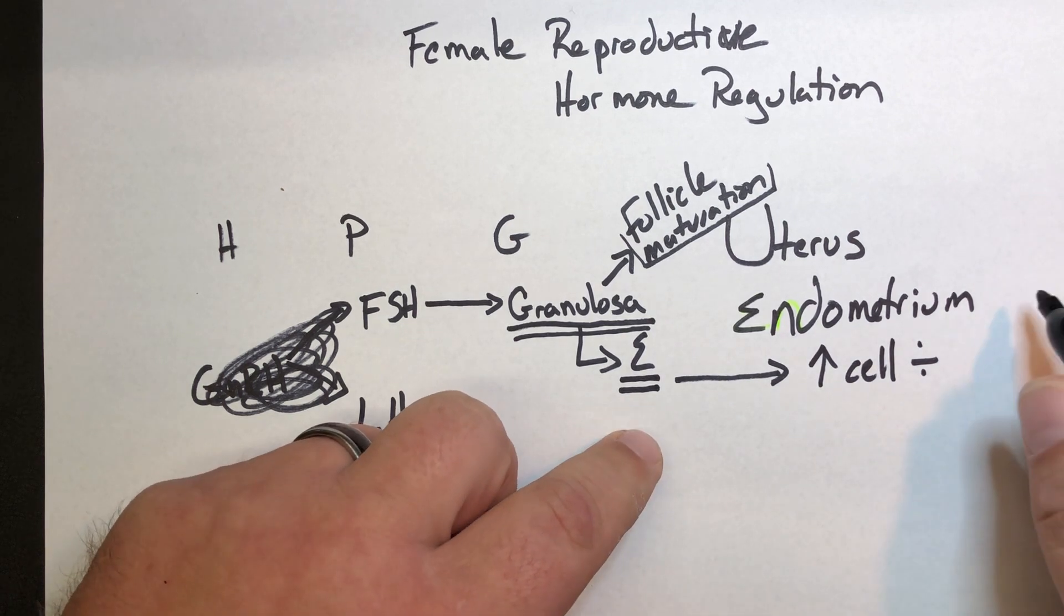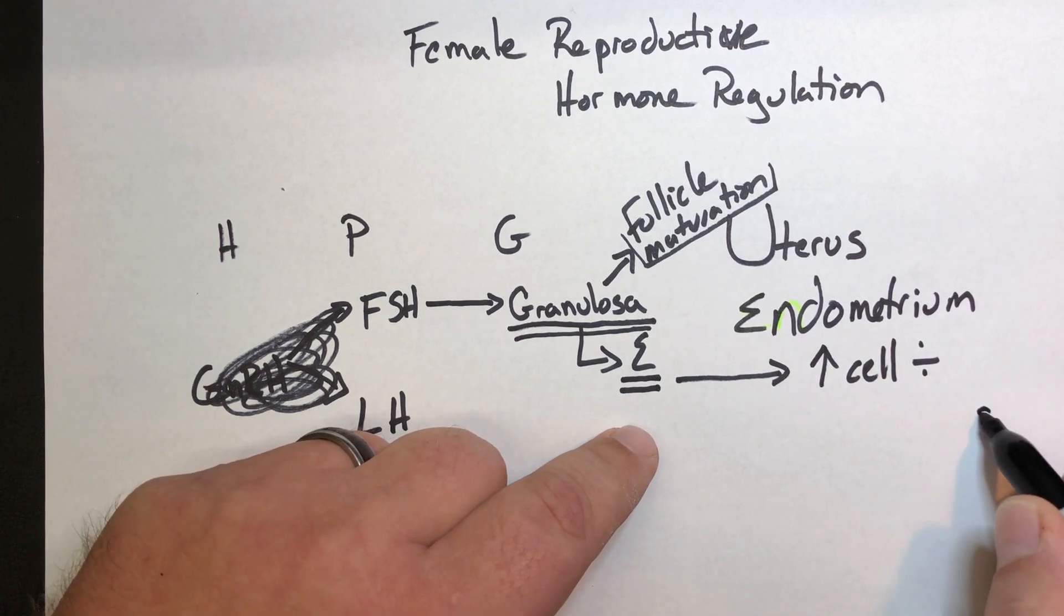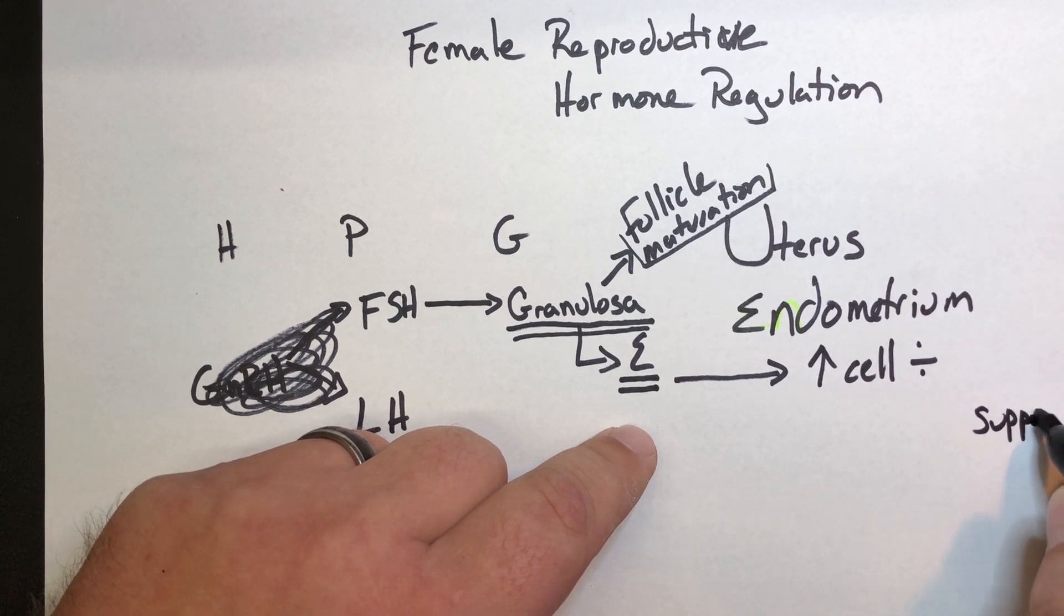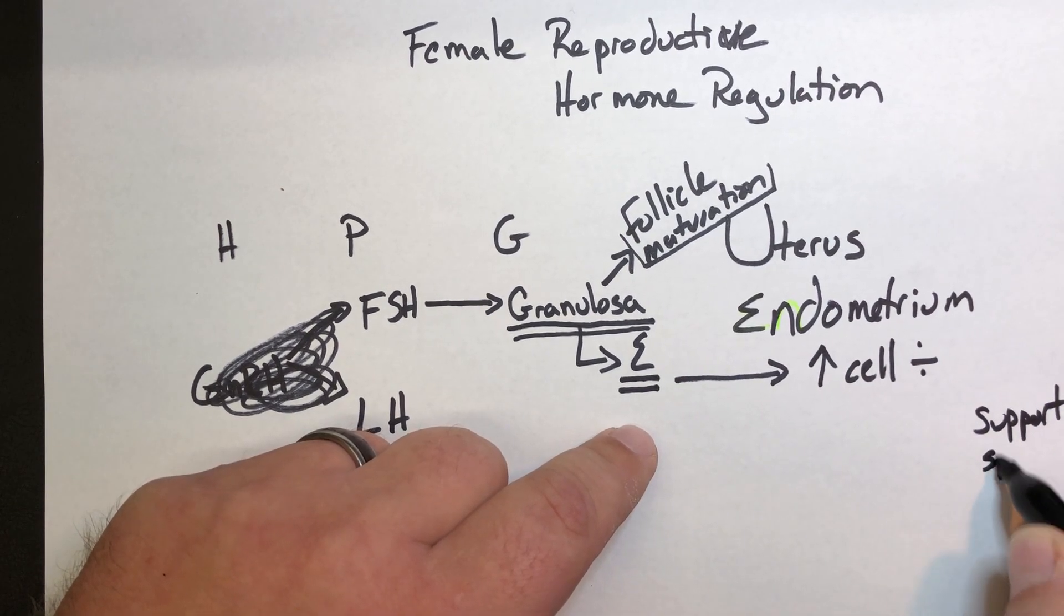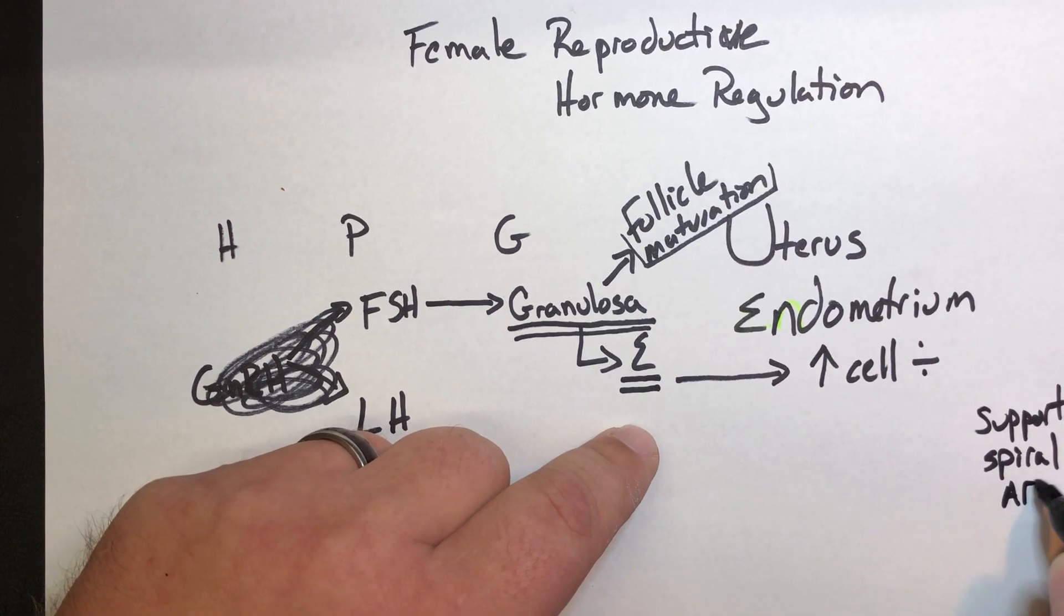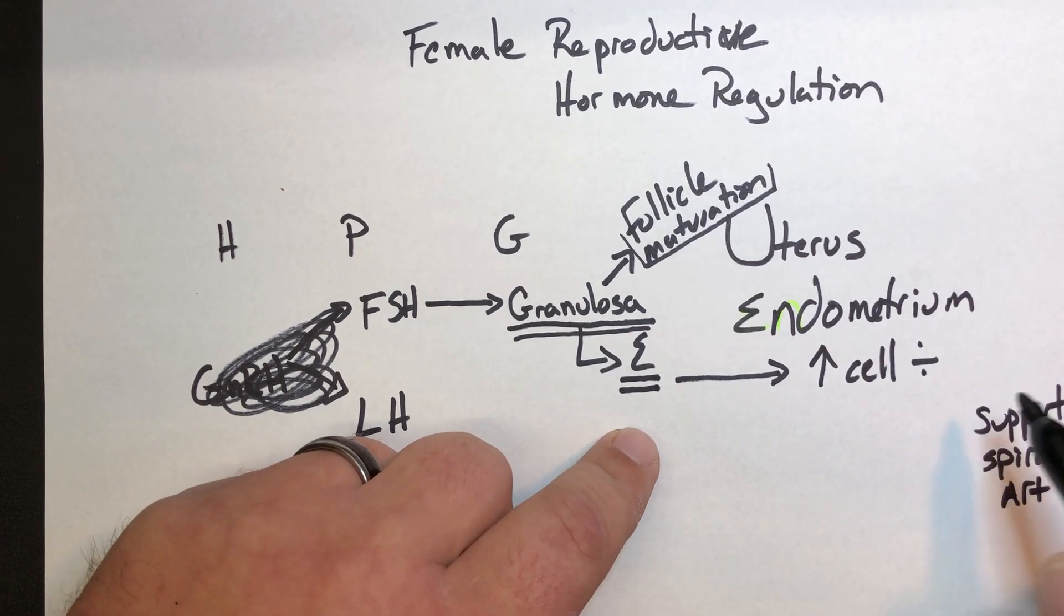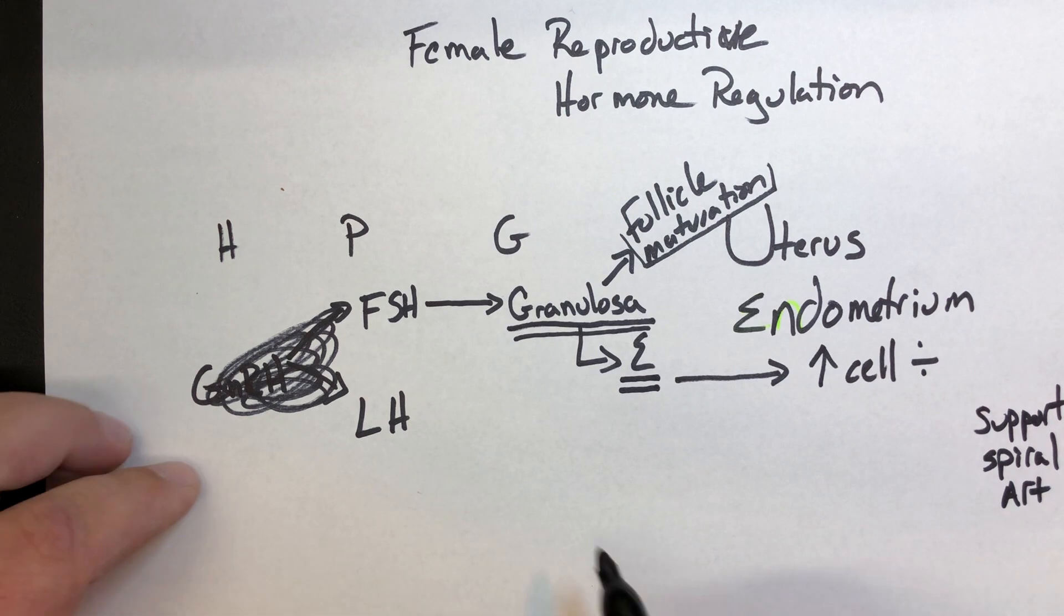Estrogen also is important for supporting the spiral arteries. So spiral arteries provide the blood to the endometrium. So estrogen plays an important role in that.